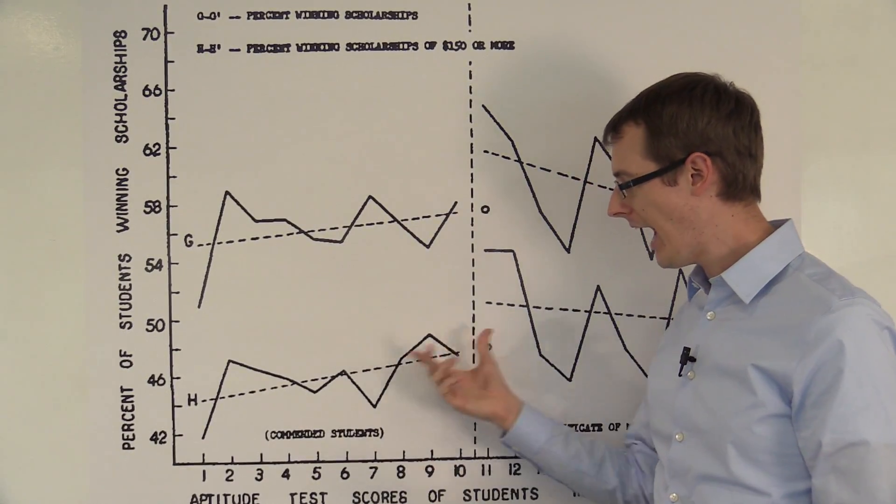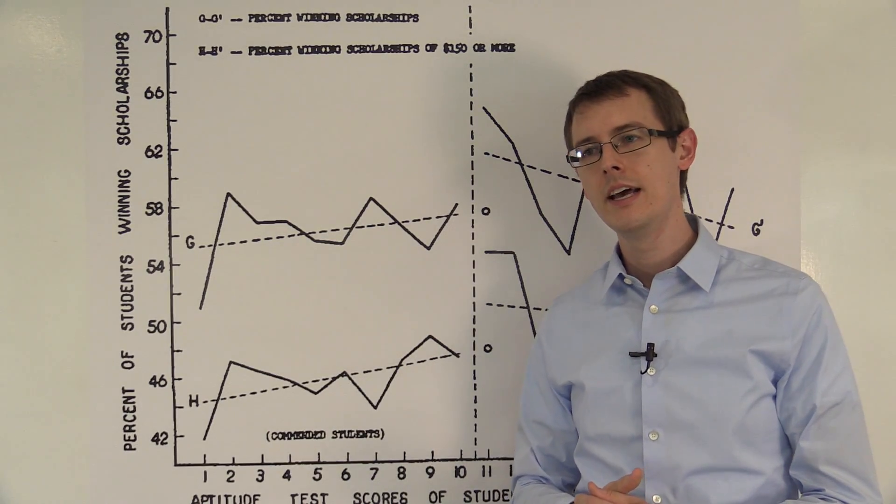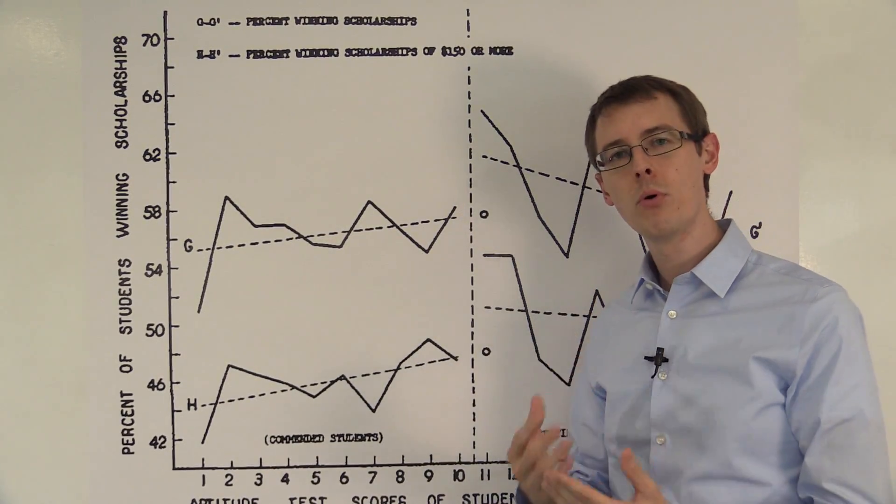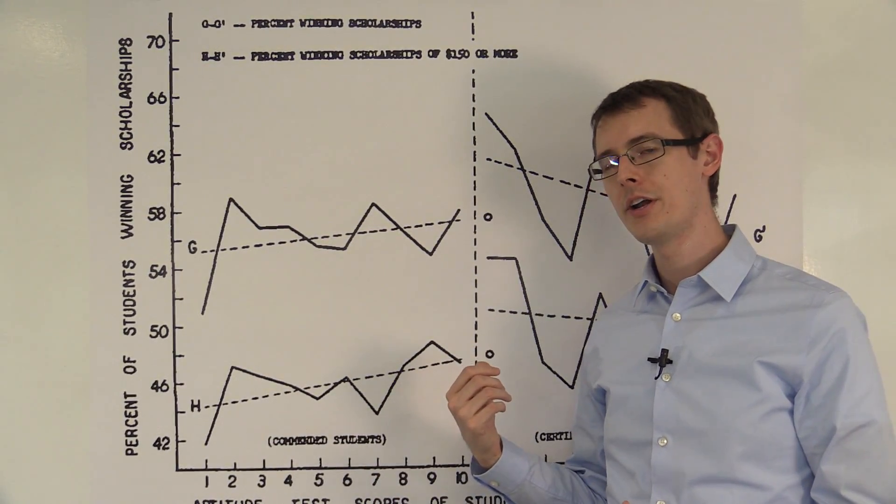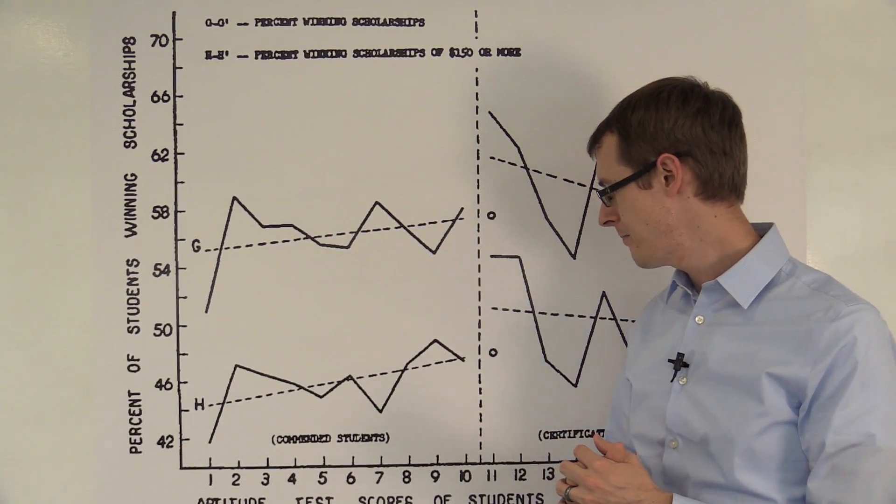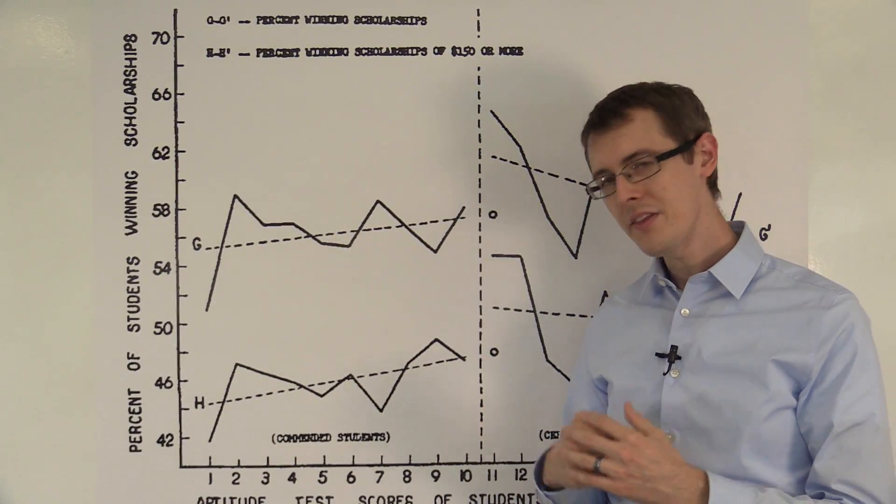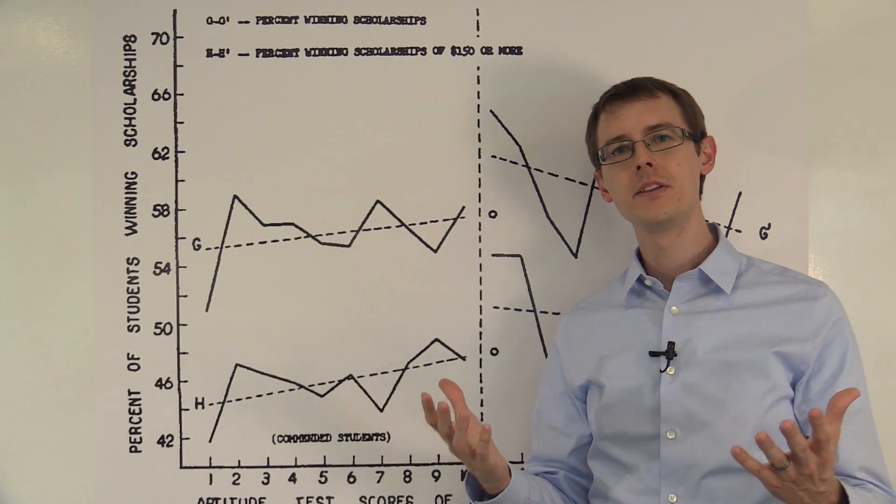And choosing this bandwidth and how exactly to compute the treatment effect is the most important problem in an RDD design, regression discontinuity. So these are a few ways you can do it, but there's no easy answer.